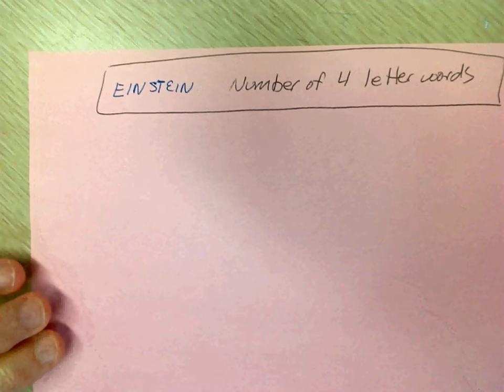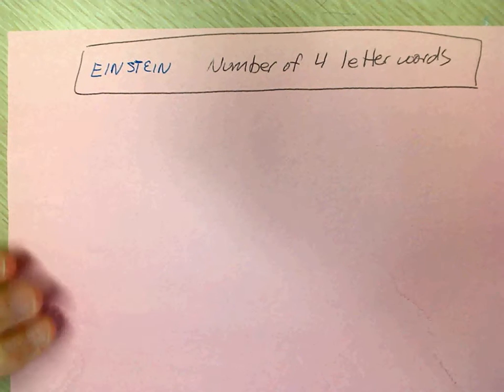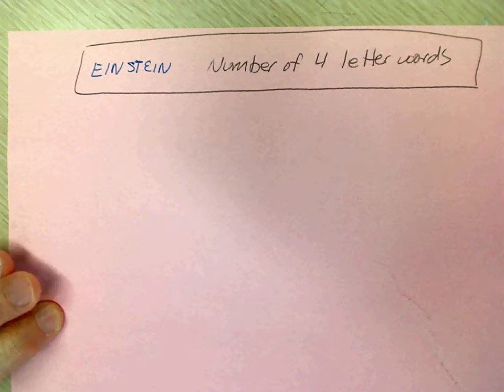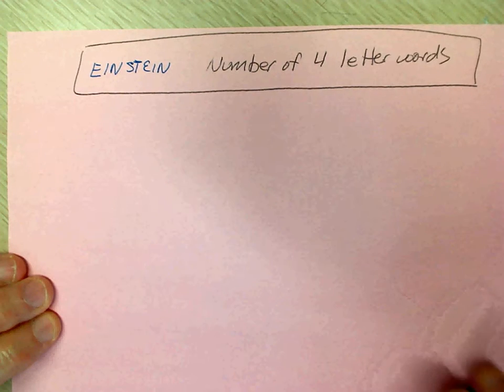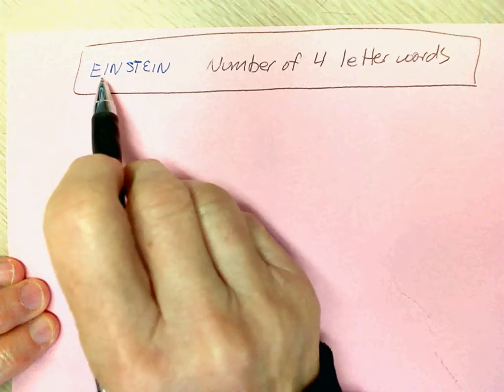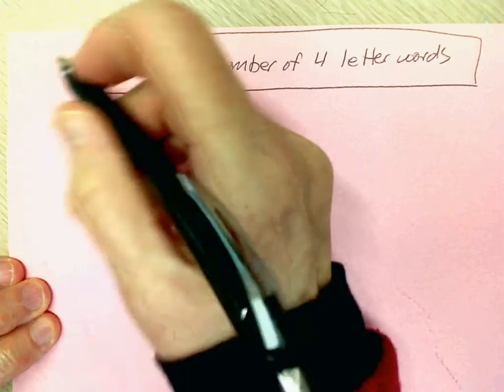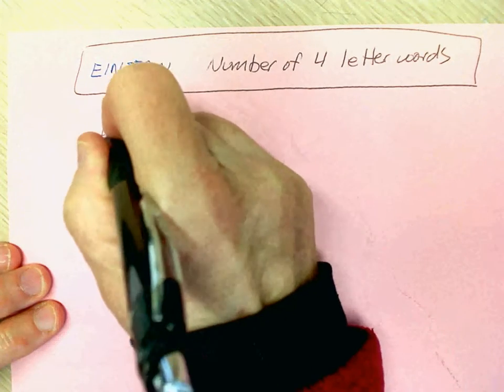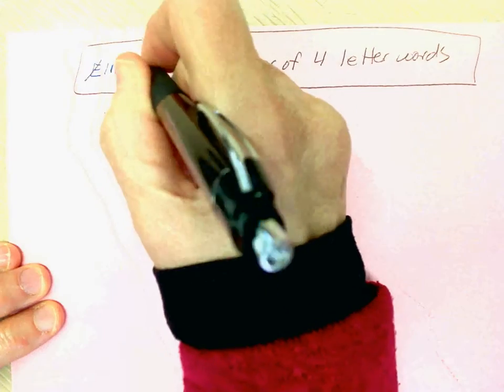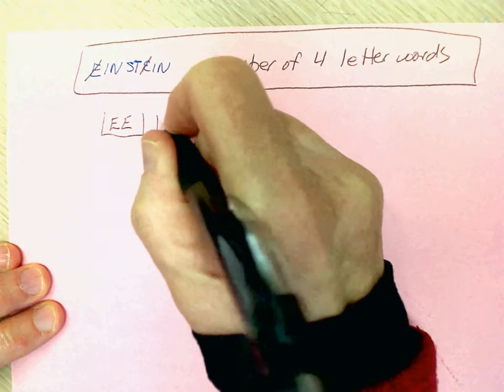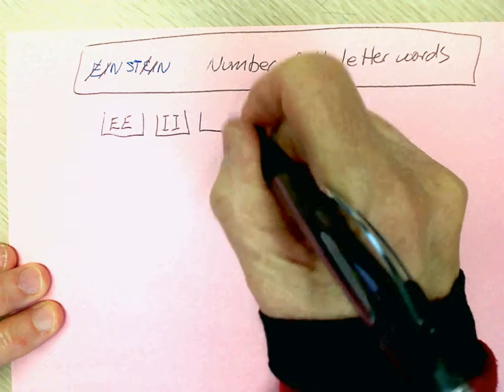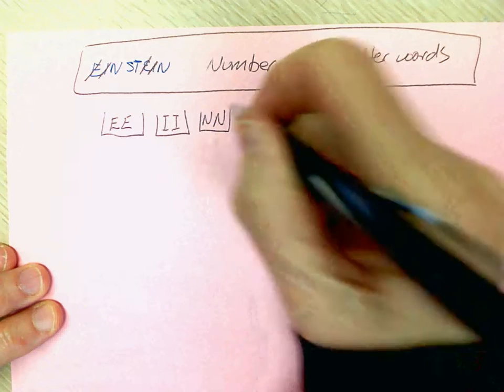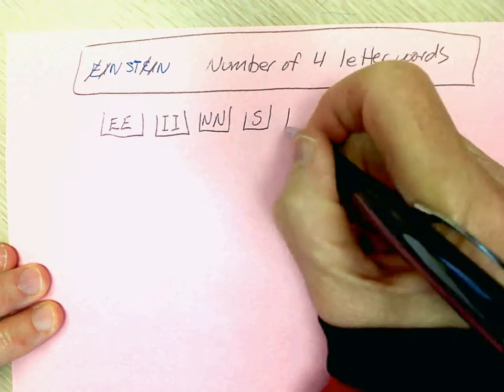Okay, so we're just going to do a review of yesterday's work, and we're going to try to calculate the number of four-letter words using the letters of Einstein. So the first step is to put our letters into buckets, and that will help us. We have two E's, we have two I's, we have two N's, and then we have one S and one T.